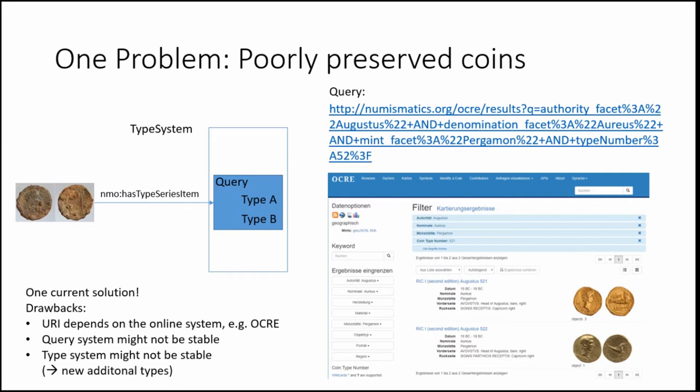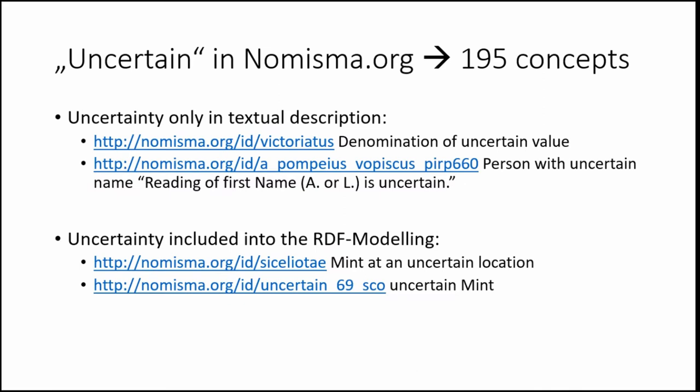The coin types being linked to might not be stable because there might be a new edition of the reference work and entries might get changed. So this seems to work but it's not really a good solution. We have also been checking our data against various concepts in nomisma.org.